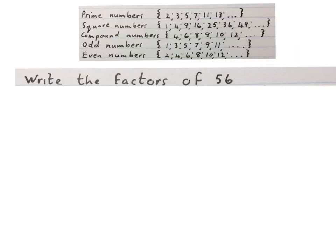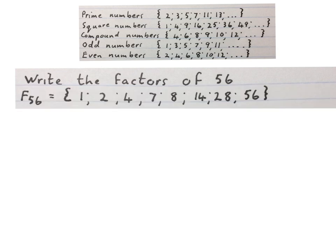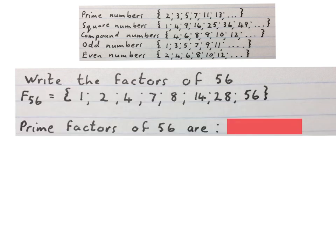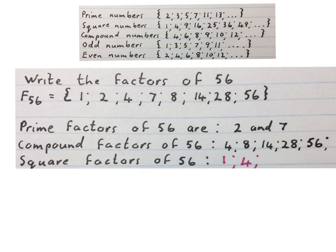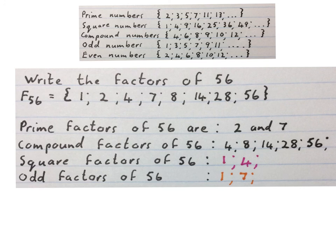Let's answer this question on factors. It says, write the factors of 56. That will give you these factors. Now see if you can answer this. The prime factors of 56 are 2 and 7. They are factors and they are prime. The compound factors of 56 are 4, 8, 14, 28 and 56 because they have more than two factors of their own. The square factors of 56 are 1 and 4. And the odd factors of 56 are 1 and 7. Please stop the video and get your head around this question.